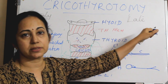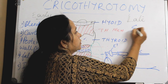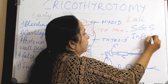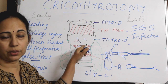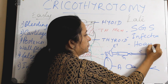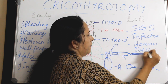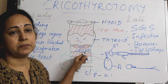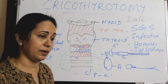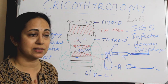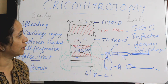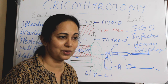Late complications include subglottic stenosis, infection, change in voice due to injury to the vocal cords, dysphagia, and persistent tract formation. Even with all these complications, in a CICO emergency situation you must go for cricothyroidotomy. This is all regarding cricothyroidotomy. Thank you.